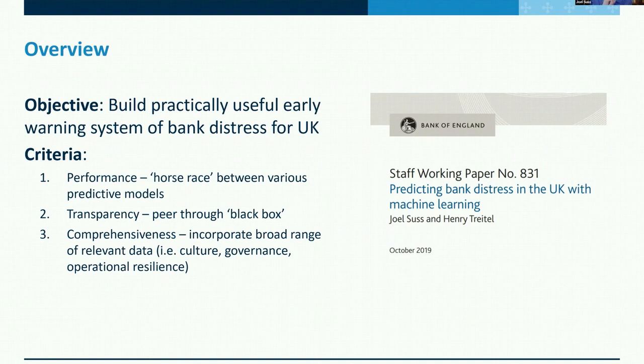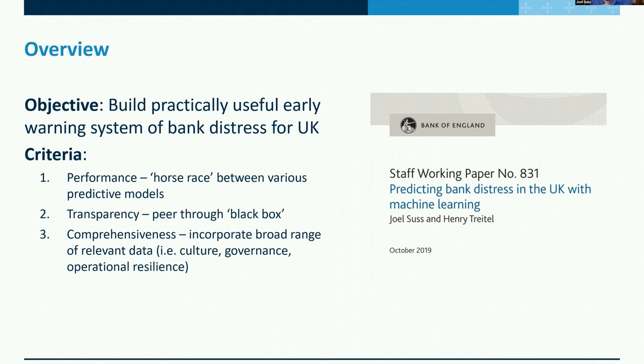The third criterion is comprehensiveness. This is really about incorporating a broader range of data than is typical. In our staff working paper we used balance sheet and financial statements, but there's non-financial data — data relating to organizational culture, management and governance, and operational resilience — that is very important for anticipating distress and that Bank of England supervisors pay attention to. We wanted to incorporate this kind of data to really get to a practically useful early warning system model.